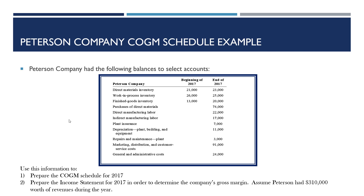We have Peterson Company's beginning and ending direct materials inventory, WIP inventory, and finished goods inventory for the period of 2017. We have how much they purchased in direct materials, what their total expense was for direct labor and indirect labor, the amount they paid for insurance on their manufacturing plant, the amount of depreciation on their plant and equipment, and the amount they paid for repairs and maintenance on that plant and equipment during the period.